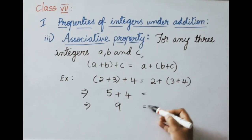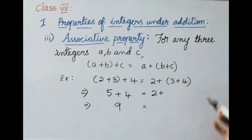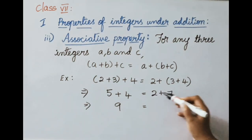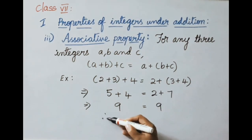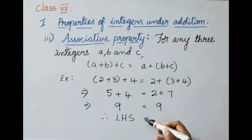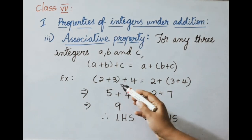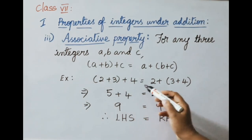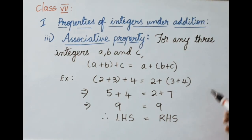Now the RHS part: 3 plus 4 equals 7, then 2 plus 7 equals 9. Therefore LHS equals RHS. So (2 plus 3) plus 4 equals 2 plus (3 plus 4) — both equal 9.